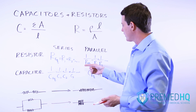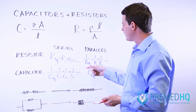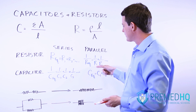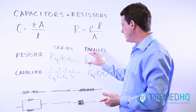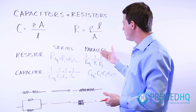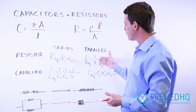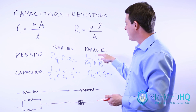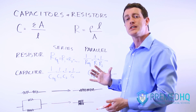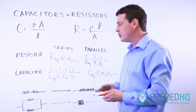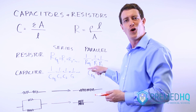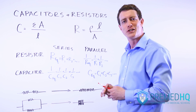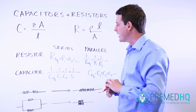And so you're going to see that one over the equivalent resistance is equal to the sum of the reciprocals. As you do more of these problems, you'll recognize that if you keep adding the reciprocals of these numbers, you're going to end up with a smaller overall equivalent resistance.